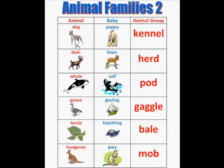So here we have a dog, and the dog's baby is called a puppy, and the animal group is called a kennel.